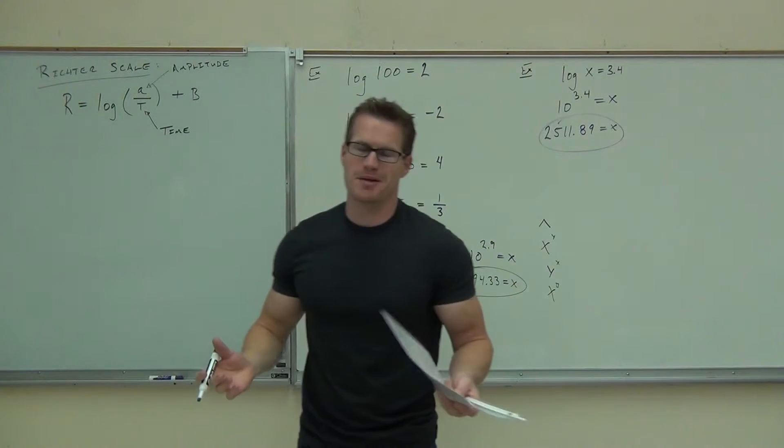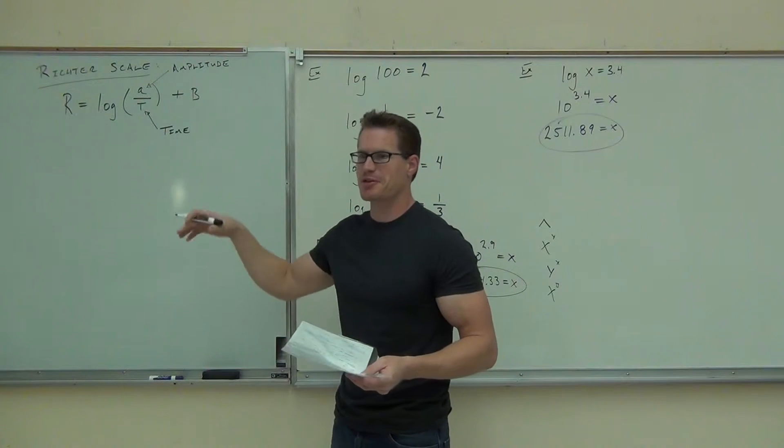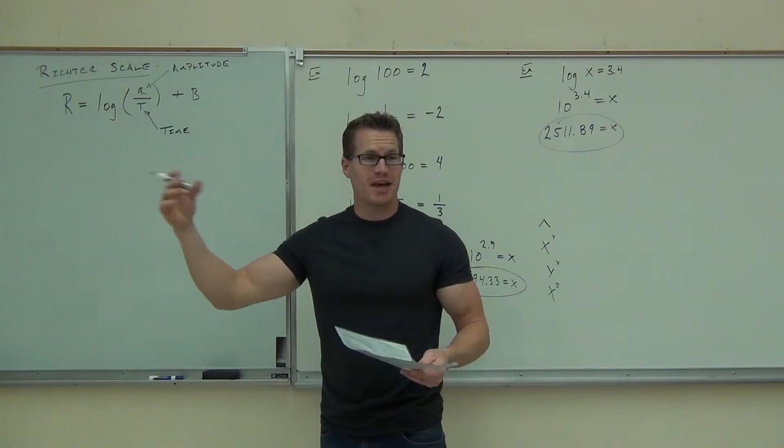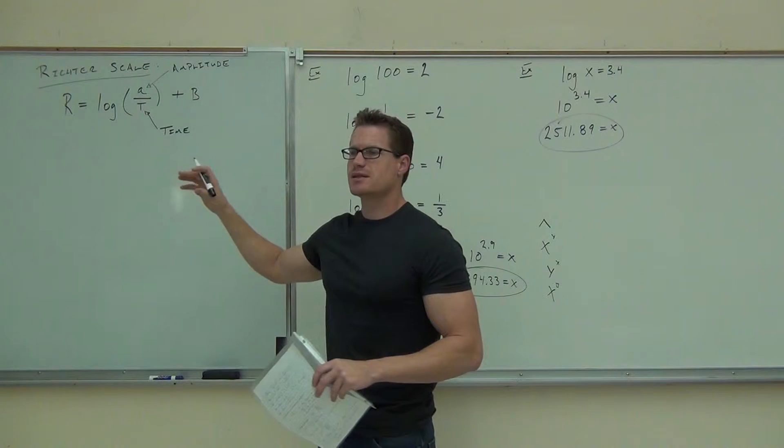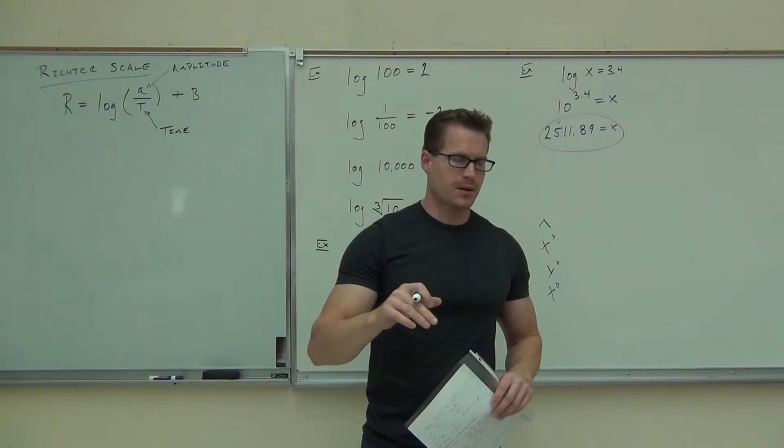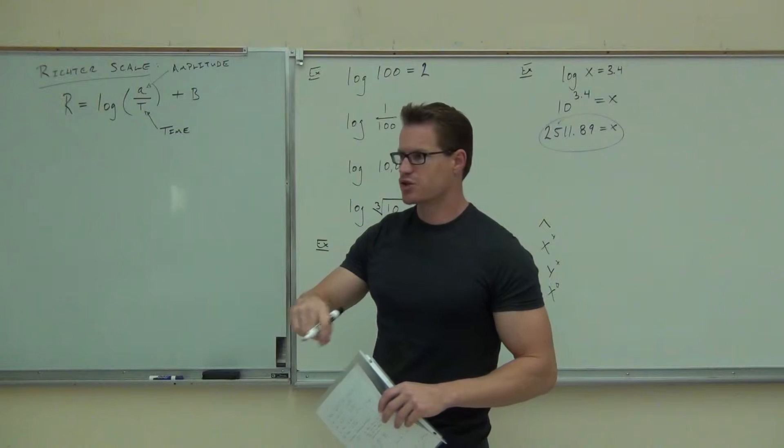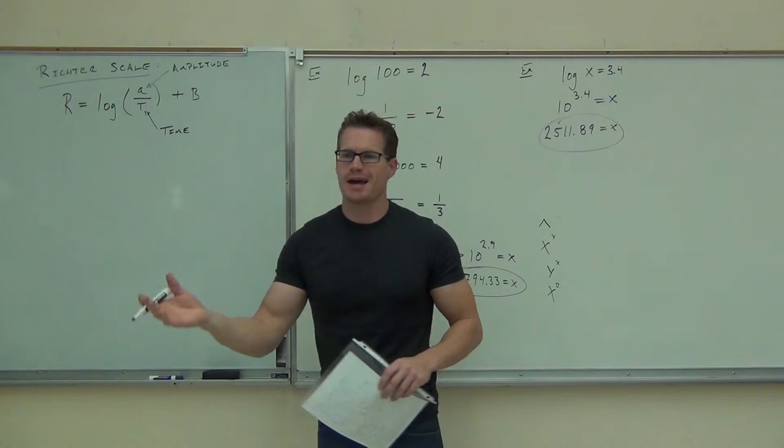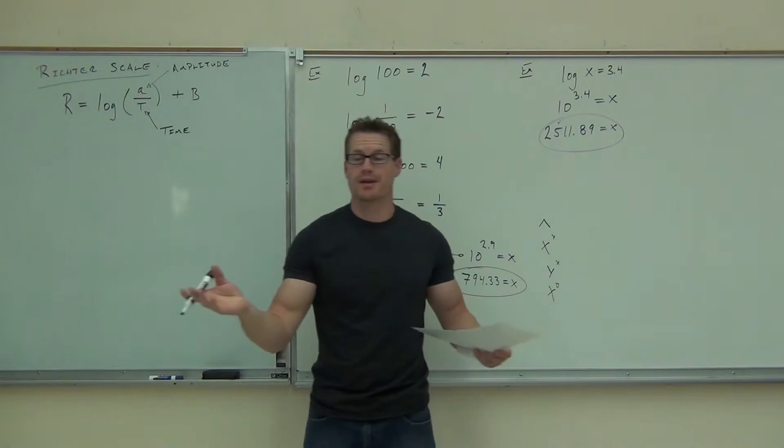Now, I don't know everything about earthquakes because I'm a mathematician, so I can't pretend to tell you everything about the Richter scale. I know what the A and the T stand for. B is some kind of base. It's a set number. It doesn't change for a certain area. I think it has something to do with the consistency of the ground. I really honestly don't know.